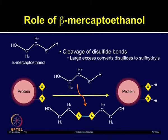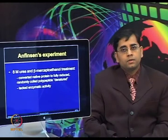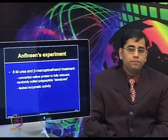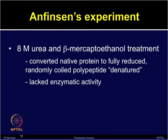What is the role of beta-mercaptoethanol? Beta-mercaptoethanol is commonly used to reduce the disulfide linkages in proteins, and thereby it disrupts the tertiary and quaternary structures. In the presence of excess beta-mercaptoethanol, the disulfide bonds between cysteines can be fully converted into free thiol groups. In Anfinsen's experiment, he used 8 molar urea and beta-mercaptoethanol treatment, which converted the native protein to a fully reduced state into randomly coiled polypeptides known as the denatured structure.